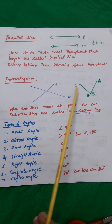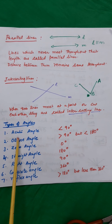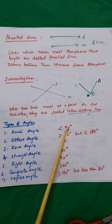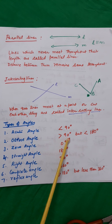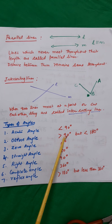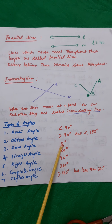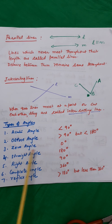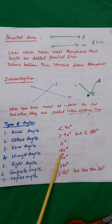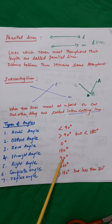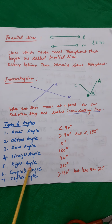Now, there are lots of types of angles. Let us see. First is acute angle — when the degree measure of the angle is less than 90 degrees, it is called an acute angle. When the degree measure is greater than 90 degrees but less than 180 degrees, it is called an obtuse angle. If the degree measure is 0 degrees, it is called a zero angle. If the degree measure is 180 degrees, it is called a straight angle. If the degree measure is 90 degrees, it is called a right angle.